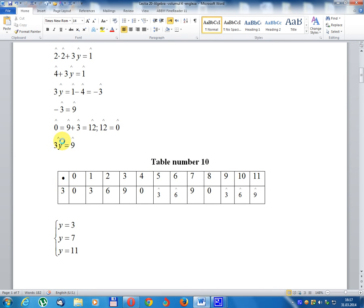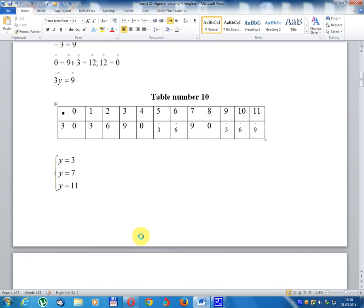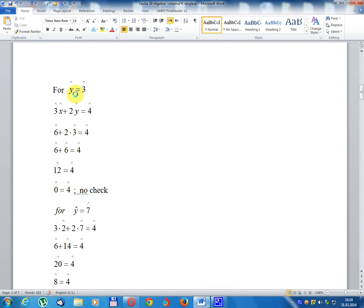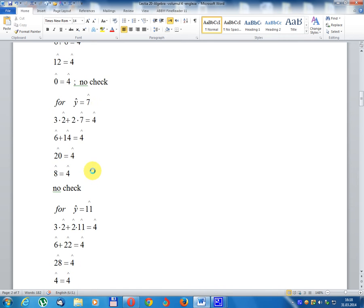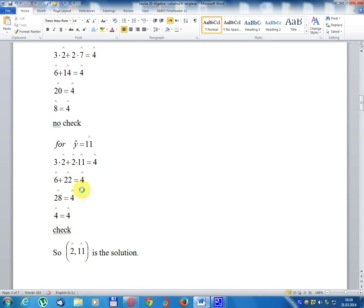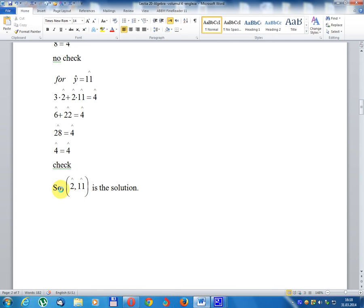3 multiplied equals 9, so y = 3, 7, or 11. Checking: y = 3 gives no check, y = 7 gives no check, y = 11 checks. So the solution is (2, 11).